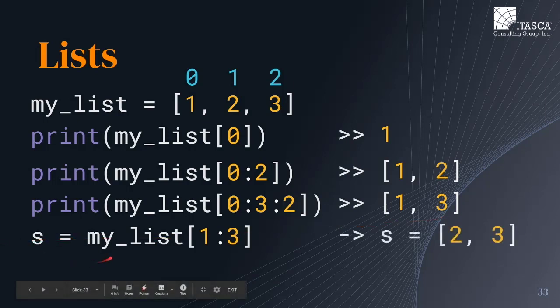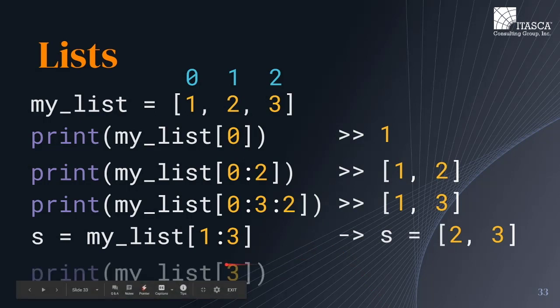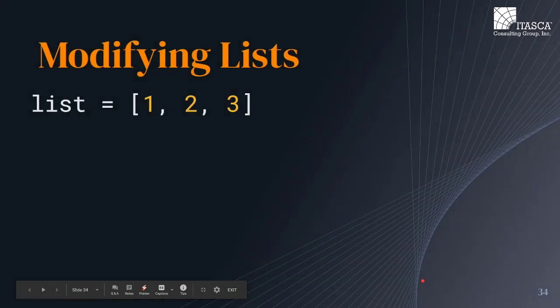We can also use this sublisting and accessing different portions of a list to set new variables and new elements. Now, one thing to note is that if you try to access an index which doesn't have a corresponding element in the list — for example, if we try to access the element at index three, and our list doesn't contain any elements at index three — this will actually throw an error and crash your program. So it's important to note how long your list is and make sure you're not going to access any portions of the list which don't actually contain data.